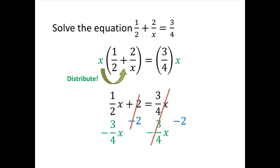When we do this, the 3 fourths x and the minus 3 fourths x on the right hand side cancel, and the plus 2 and the minus 2 on the left hand side cancel.